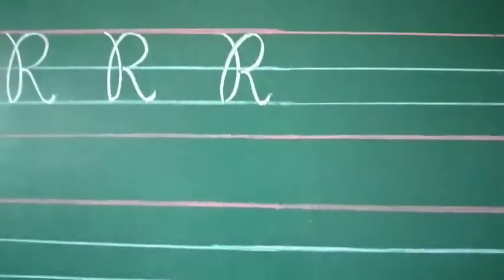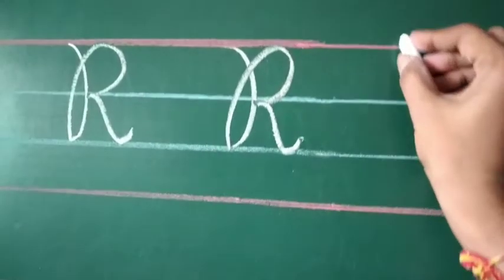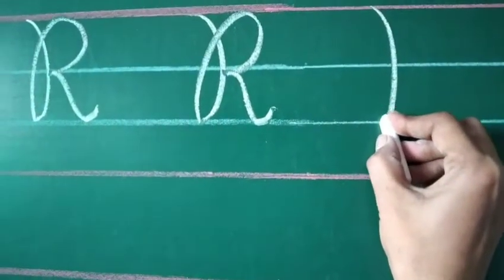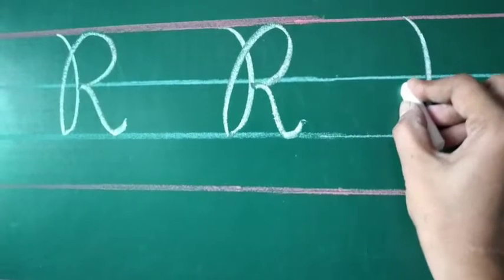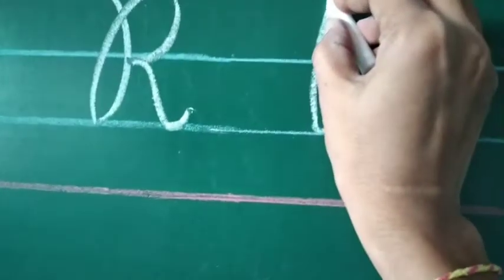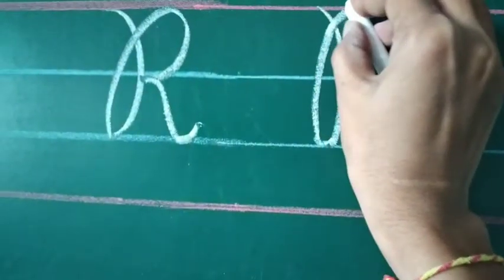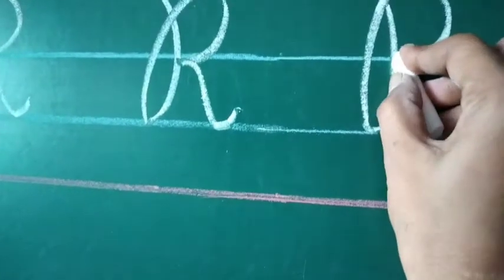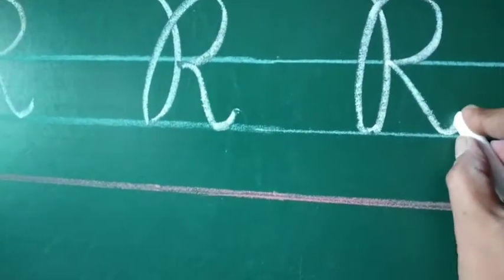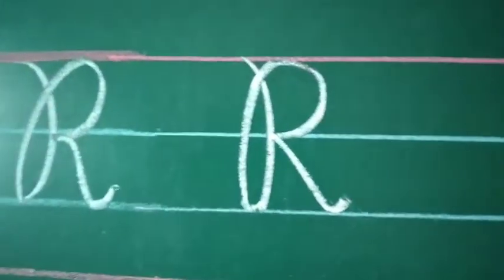Okay, so what we have to do? We have to start from the red line, then take a little turn, go up to touch the red line, make a half circle, join, make a slant line and take a little curve. This is letter R.